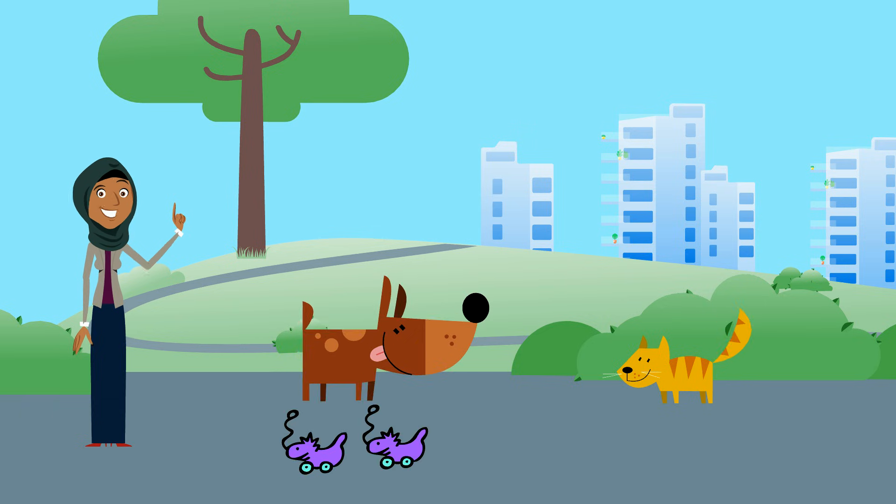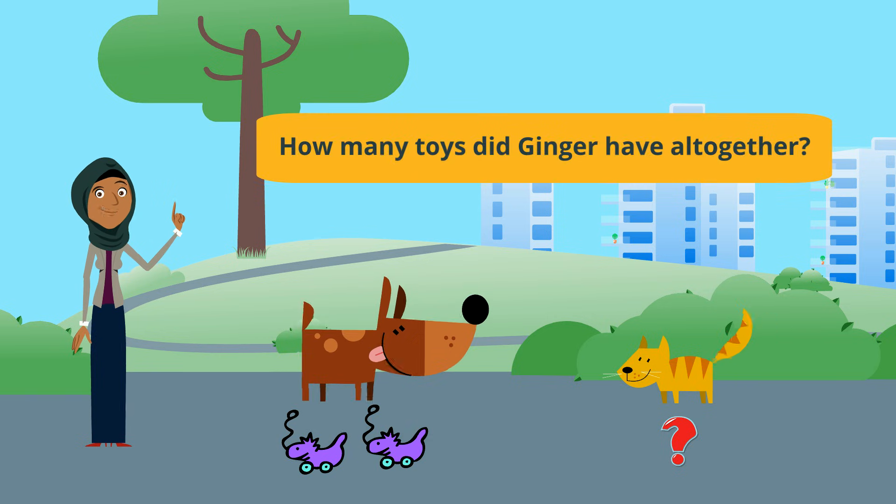Rufus had two toys. Ginger had three times as many toys. How many toys did Ginger have altogether?